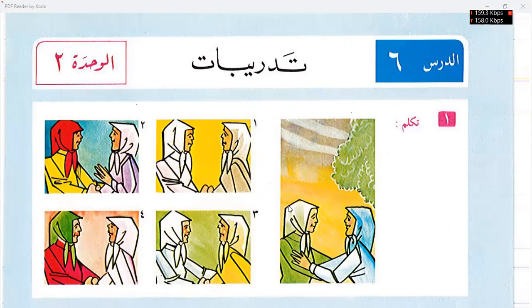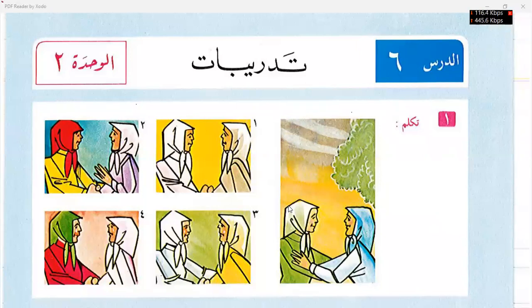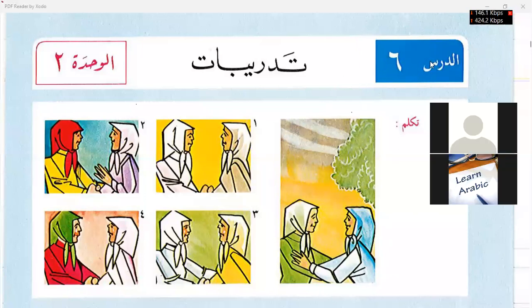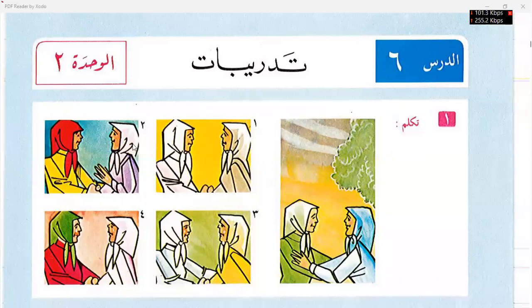Basa says: As-Salaamu Alaikum. Ibrahim replies: Wa Alaikum As-Salaam wa Rahmat. Now Basa will say: Anna Khatija — I am Khatija. Ibrahim welcomes: Ahlan wa sahlan, Ahlan wa sahlan Khatija. Then Ibrahim introduces: Anna Fatima — I am Fatima.